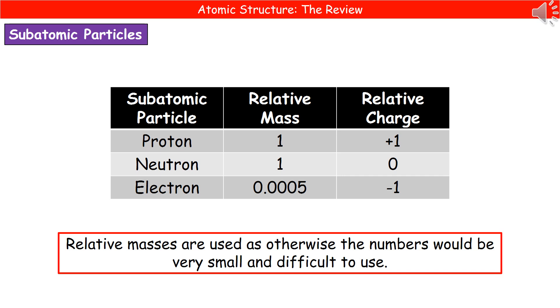If we consider these subatomic particles, then we need to know three bits of information about them. First of all, you need to know their names. Secondly, you need to know what's called the relative mass. And thirdly, their relative charge.